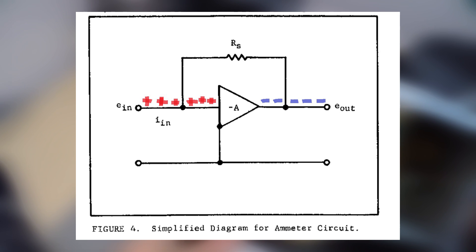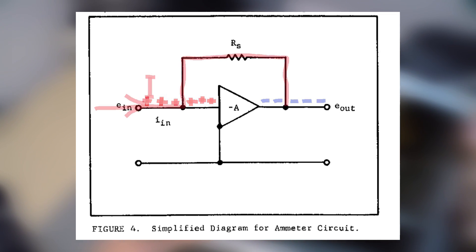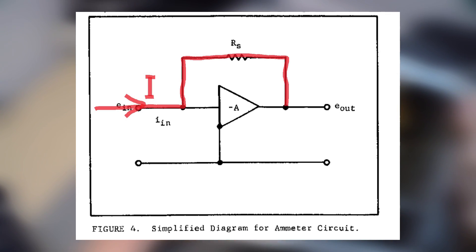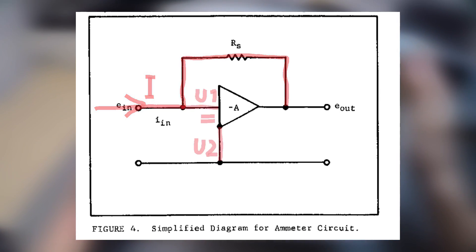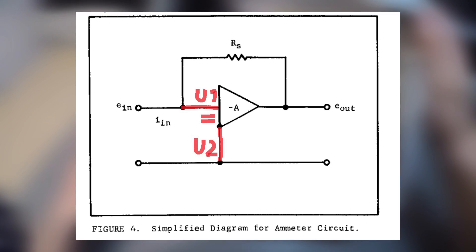Now the op-amp does its thing and tries to restore equilibrium by lowering its output voltage. It does that exactly until all the current that we introduce flows through the feedback loop because then the voltage at both inputs is exactly the same again.